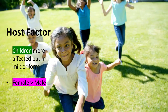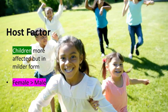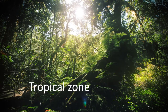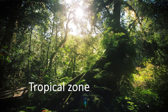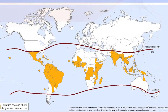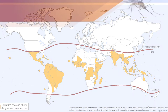Regarding host factors, children are more commonly affected than adults, but adults get the more severe form of the disease. Females are more commonly affected than males. For environmental factors, this disease is more prevalent in the tropical zone near the equator. According to WHO, more than 125 countries are dengue endemic, and more than 2.5 billion people live in these endemic areas.